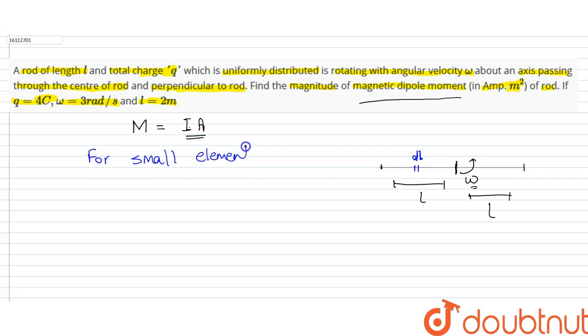If we talk about a small element dL, the charge will be dq, and if we write it in a value then it will be total charge upon total length times dL, so it will be Q/2L × dx.